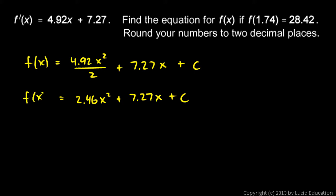So that's f. That's our general equation for f. We still don't know what c is. And then we're told that f of 1.74 is 28.42. So that means we're going to get 28.42 if we put in 1.74 for x.